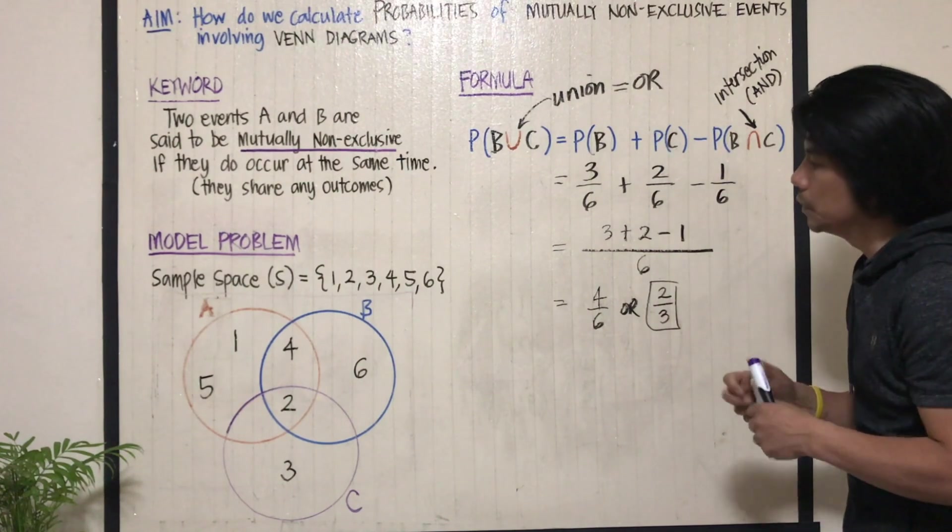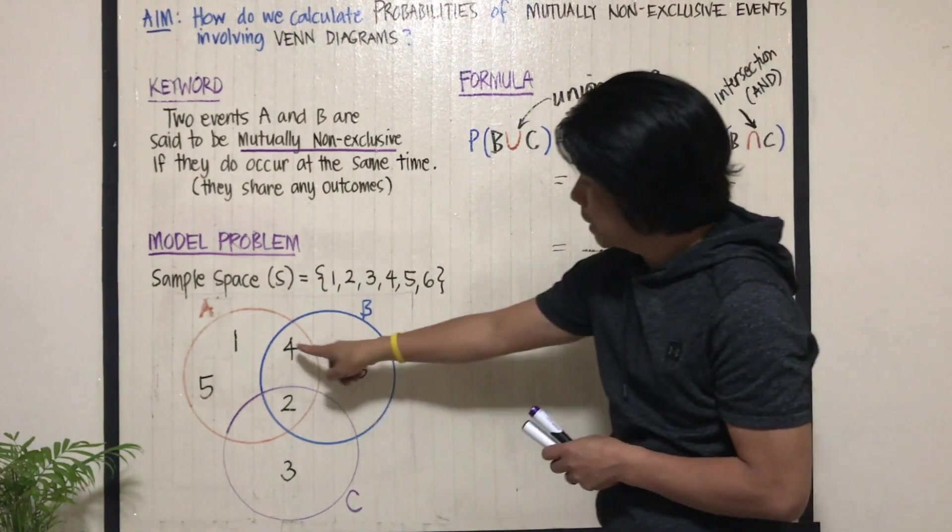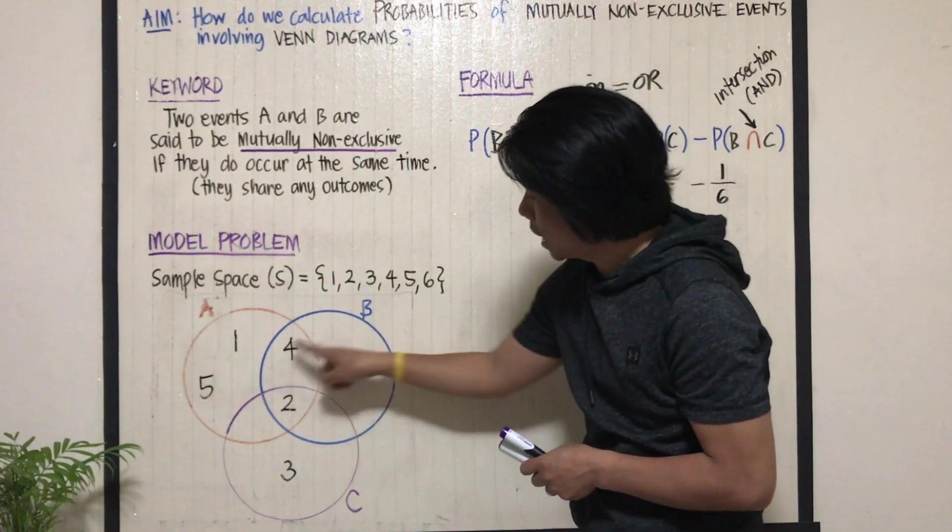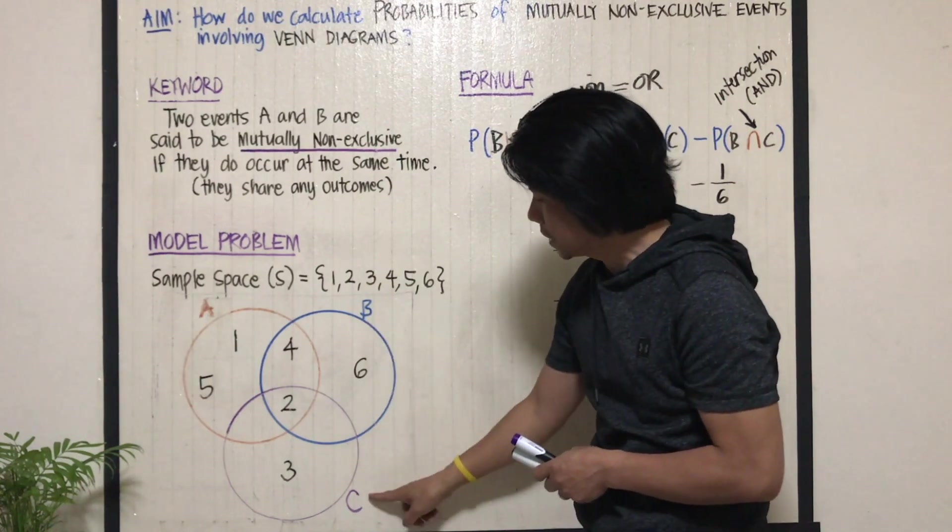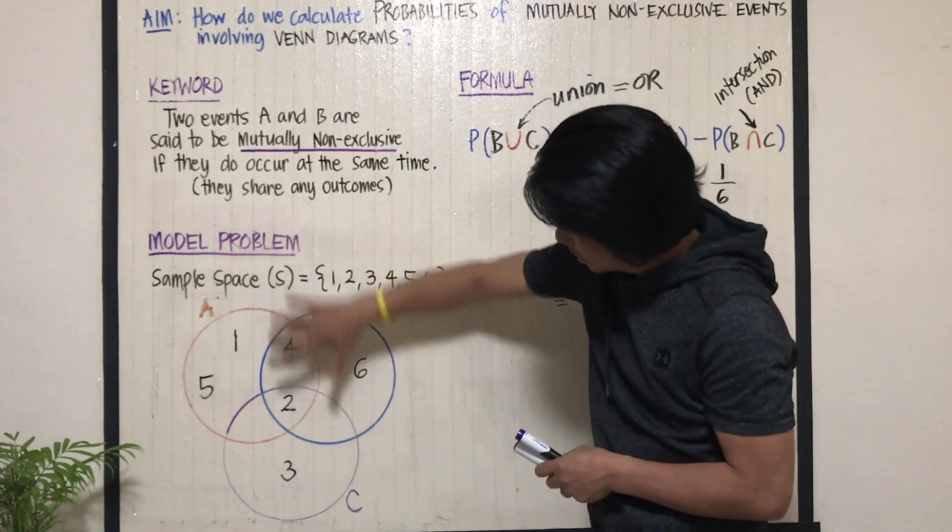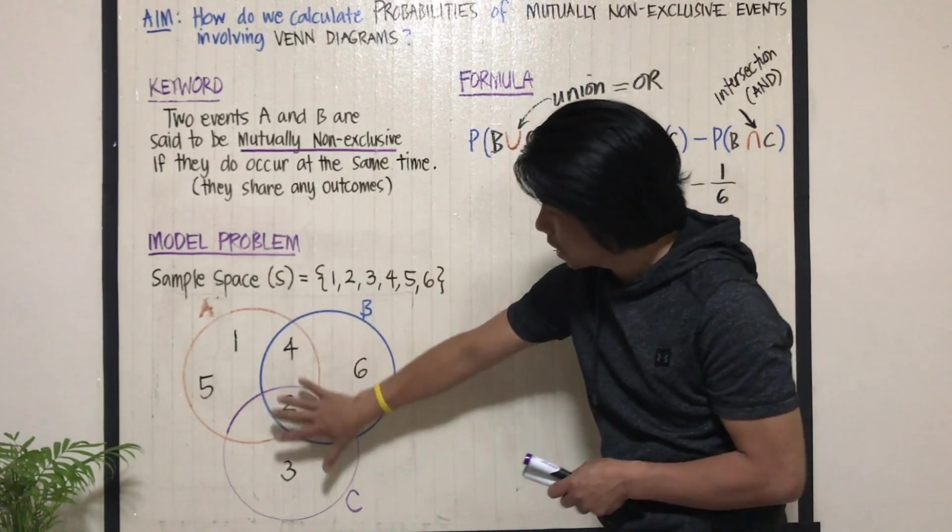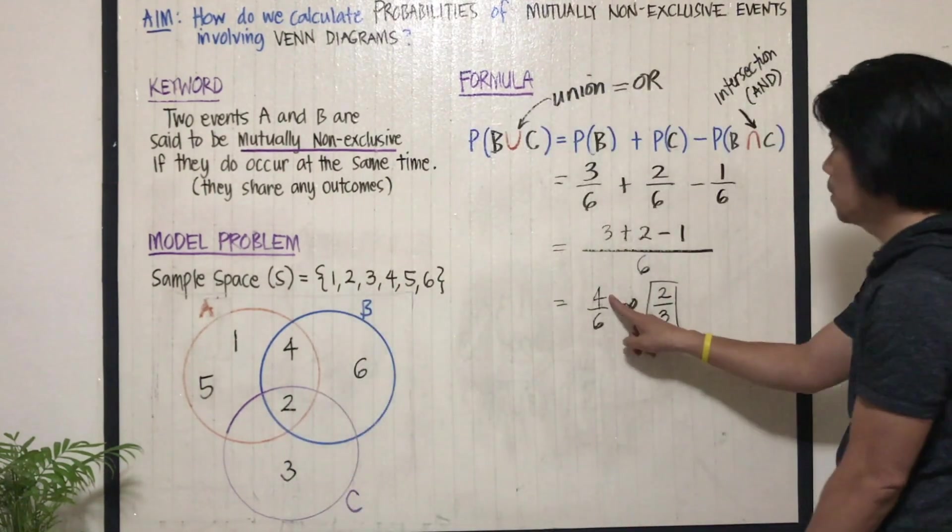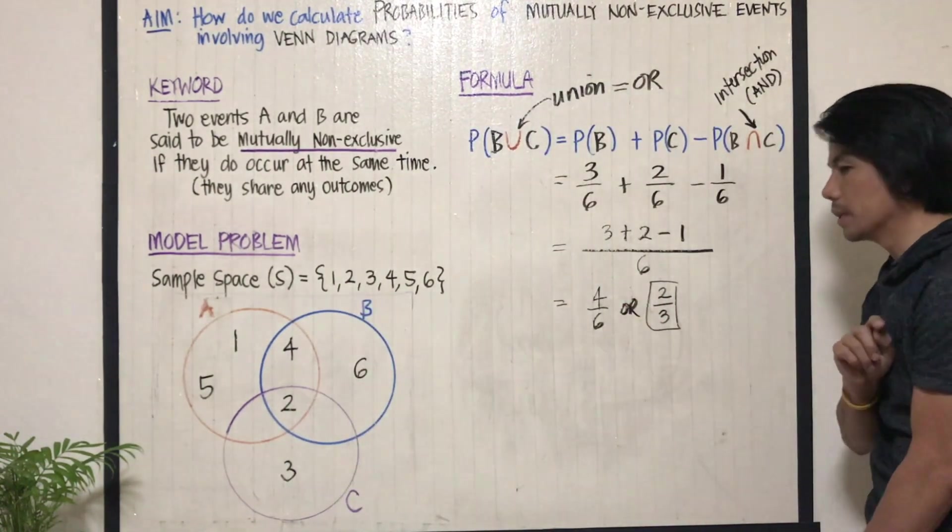Now, how do you validate? You just simply count all the numbers inside circles B and C. Obviously, there are four numbers inside both of them, four out of six, which is two over three.